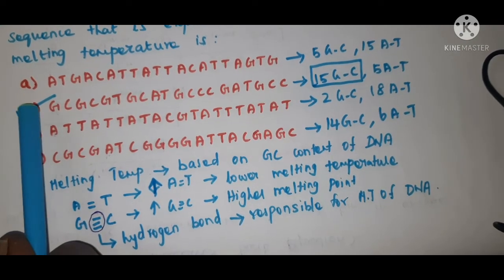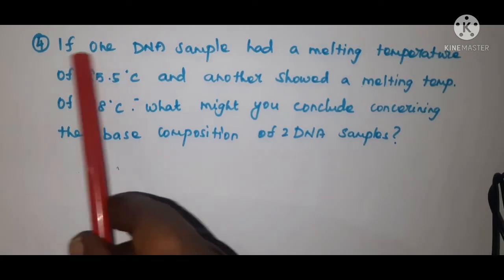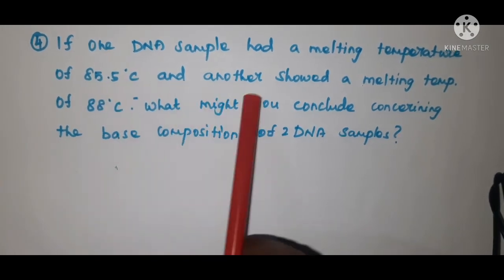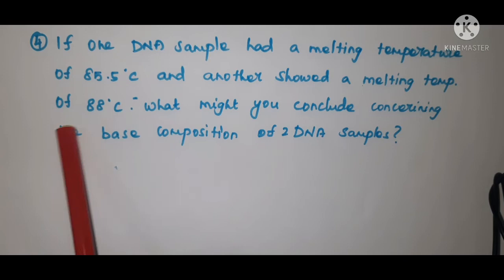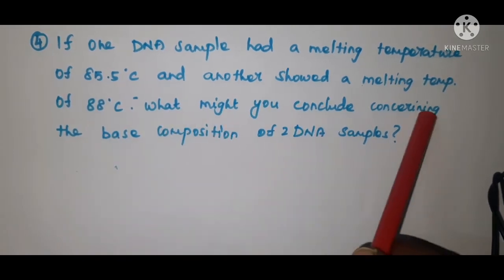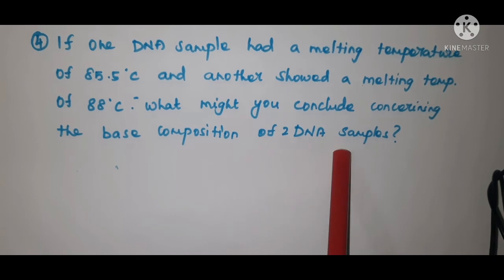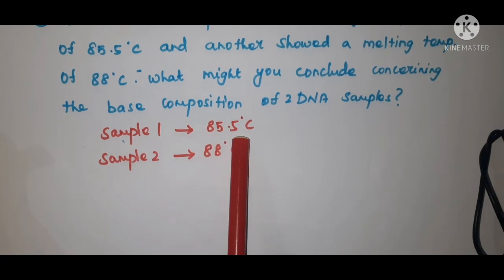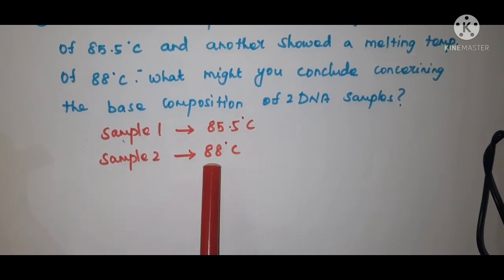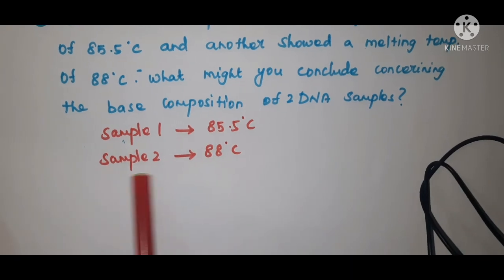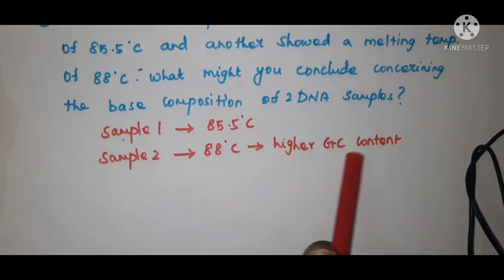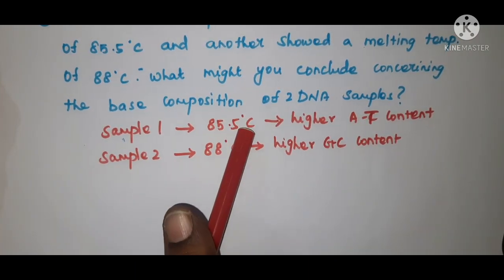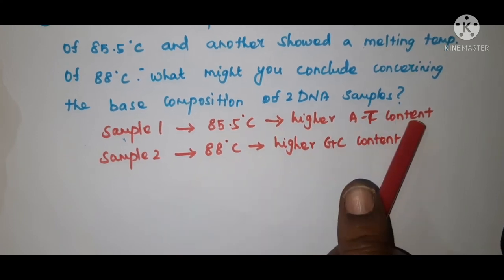So, this sequence has the higher melting temperature, and the answer is option B. The second problem: if one DNA sample had a melting temperature of 85.5 degrees centigrade and another showed a melting temperature of 88 degrees centigrade, what might you conclude concerning the base composition of the 2 DNA samples? Sample 1 has melting temperature of 85.5°C and sample 2 has 88°C. Since sample 2 has a higher melting temperature, it shows higher GC content. Sample 1 has a lower melting temperature, indicating that this DNA sample has higher AT content.